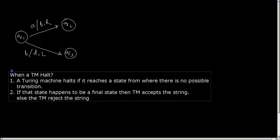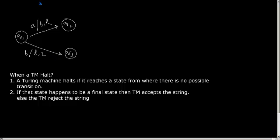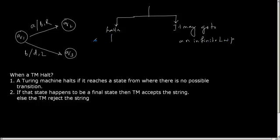So the behavior of the Turing machine can be categorized into two parts. First, either it halts or it may go to an infinite loop. Now if it halts and if the state is final, then it accepts the string.